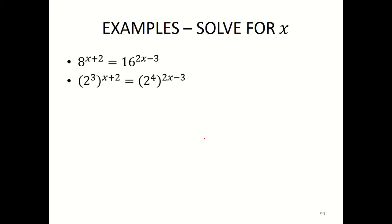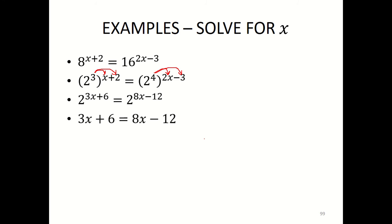Simplify 8 — 8 is 2 cubed. Simplify 16 — 16 is 2 to the exponent of 4. Multiply those, you will simply get 2 to the exponent of 3x plus 6, and 2 to the exponent of 8x minus 12. The bases are the same — drop them and equate the exponents.